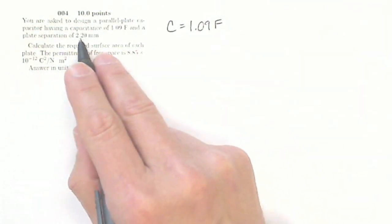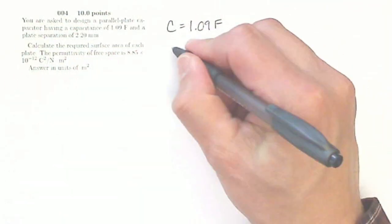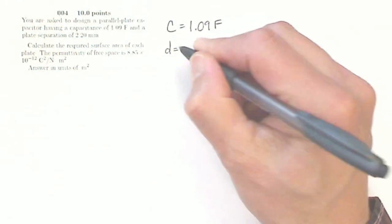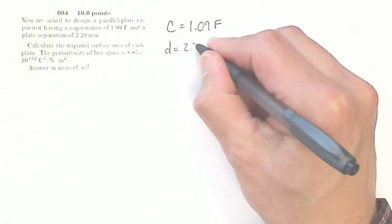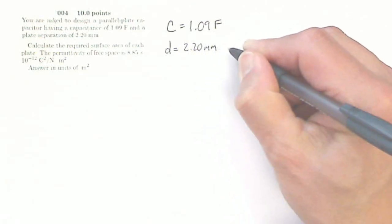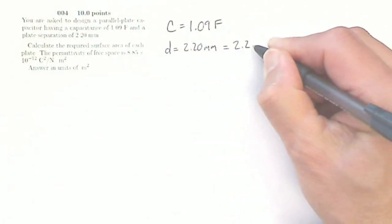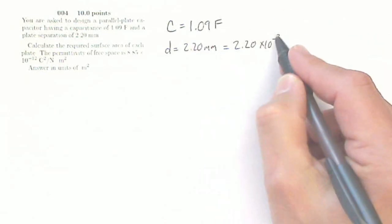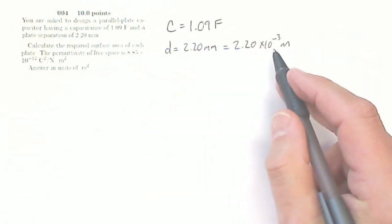And a plate separation of 2.20 millimeters. So plate separation is what I call d, in this case, is 2.20 millimeters. That's going to equal 2.20 times 10 to the minus 3 meters. That's my milli is 10 to the minus 3 meters. So that's my d.